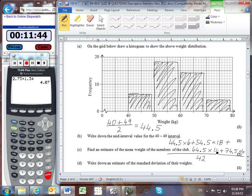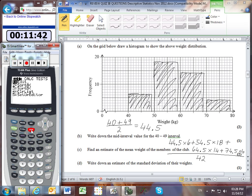Going into stat and edit, clearing the old lists. Entering the four mid-interval values: 44.5, 54.5, 64.5, and 74.5.